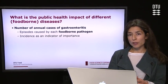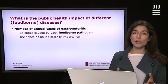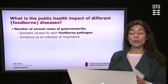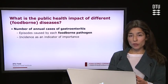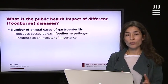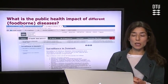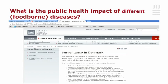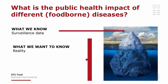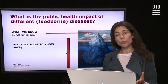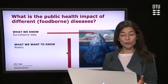The immediate answer would be to look into the number of annual cases of gastroenteritis reported in the country. For foodborne pathogens, we would look into the number of episodes caused by each pathogen, using incidence as an indicator for importance of disease. In Denmark, for example, we can access this data on the public health institute's website where they publish surveillance data annually. However, we know that these surveillance data only represent the very tip of the iceberg, and the true burden is actually much larger and unknown.